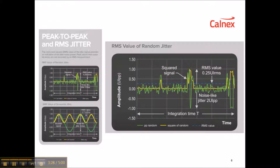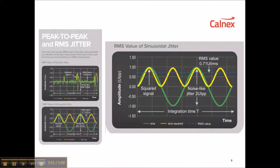The diagram on the right shows the relationship between the random Jitter signal in green, the yellow squared signal which is then averaged to produce the blue RMS signal shown as a dotted line. The peak-to-peak value here is two UI peak-to-peak, but the RMS value computed over the integration time is much smaller at 0.25 UI RMS. The next graph shows the relationship between RMS and peak-to-peak values on a sinusoidal signal. The sinusoidal peak-to-peak Jitter is two UI peak-to-peak, the square signal shown in yellow is one UI peak-to-peak, and the blue computed RMS value is one UI peak-to-peak divided by root 2, equal to 0.71 UI RMS.